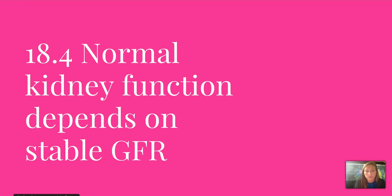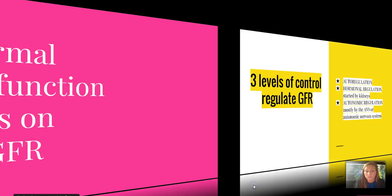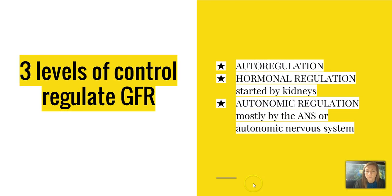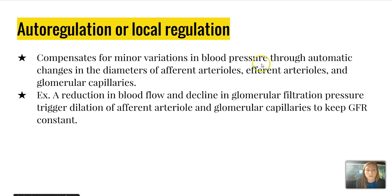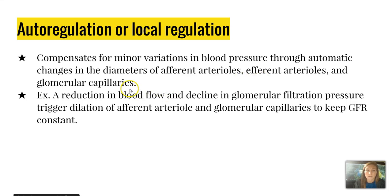Normal kidney function depends on the glomerular filtration rate. There are three levels of control for GFR: autoregulation, hormonal regulation, and autonomic regulation. Autoregulation is also known as local regulation, which compensates for minor variations in blood pressure through automatic changes in the diameter of the afferent arterioles, efferent arterioles, and glomerular capillaries. For example, a reduction in blood flow and decline in glomerular filtration pressure would trigger dilation of afferent arterioles and glomerular capillaries to keep GFR constant.